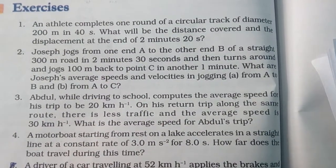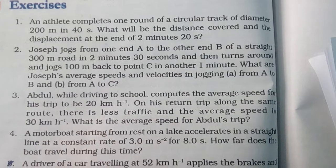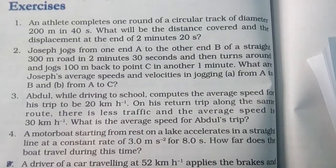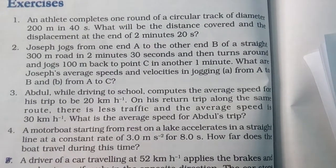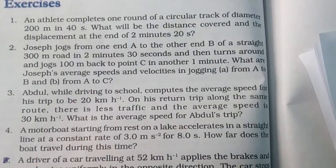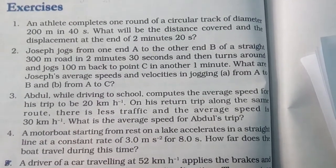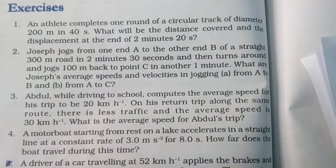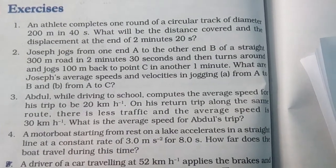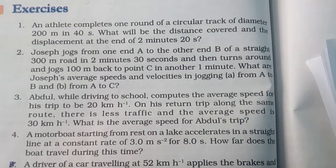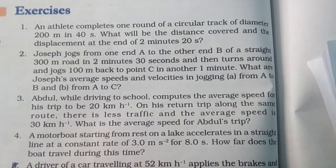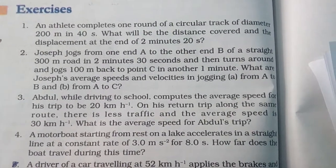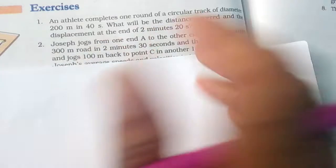An athlete completes one round of a circular track of diameter 200 meters in 40 seconds. What will be the distance covered and displacement at the end of 2 minutes 20 seconds? 2 minutes 20 seconds means 140 seconds, because 2 minutes equals 120 seconds plus 20 seconds. So we have to find distance and displacement after 140 seconds.